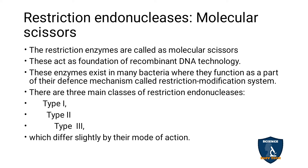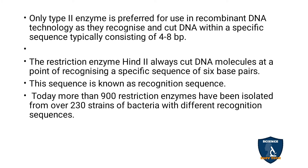There are three main classes of restriction endonucleases: Type 1, Type 2, and Type 3, which differ slightly in their mode of action. Only Type 2 enzyme is preferred for use in recombinant DNA technology, as it recognizes and cuts the DNA within a specific sequence typically consisting of 4 to 8 bases.